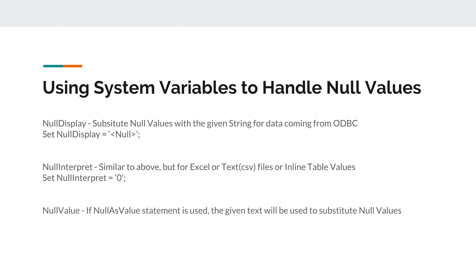Next is the NullValue variable, which is a bit special because it helps you further customize how you define null values. In this case you can specify null values on a particular field. If the 'NullAsValue' keyword statement is used, the given text will be used to substitute null values within the NullValue variable. So we say: NullAsValue Field1, Field2 — with a semicolon.